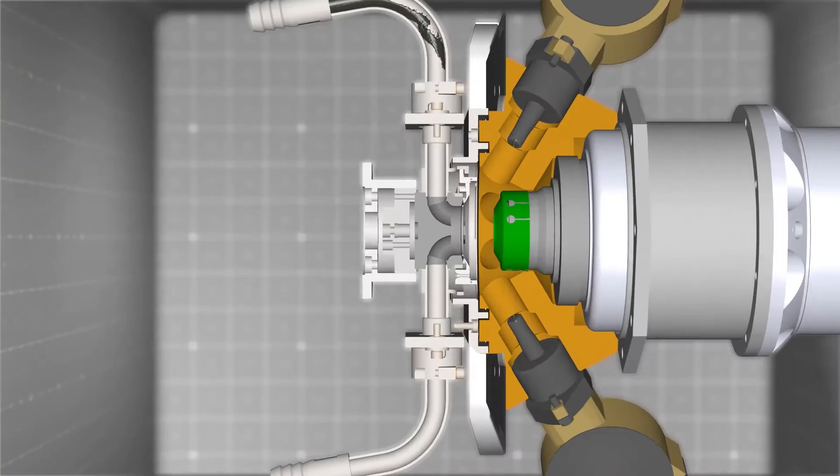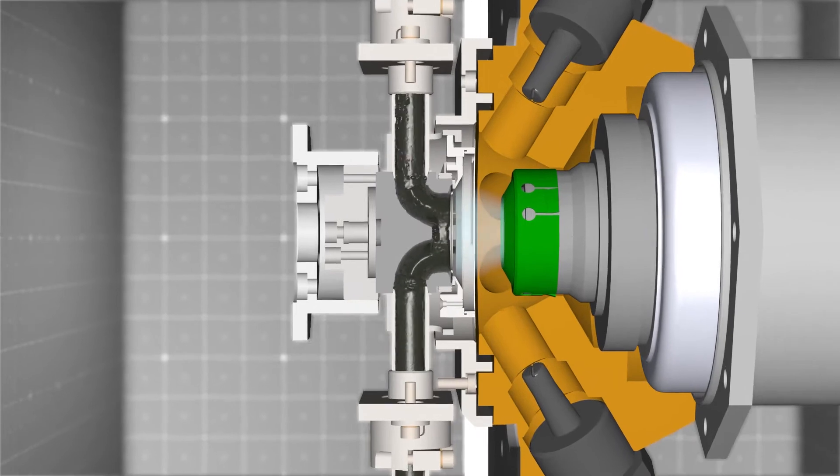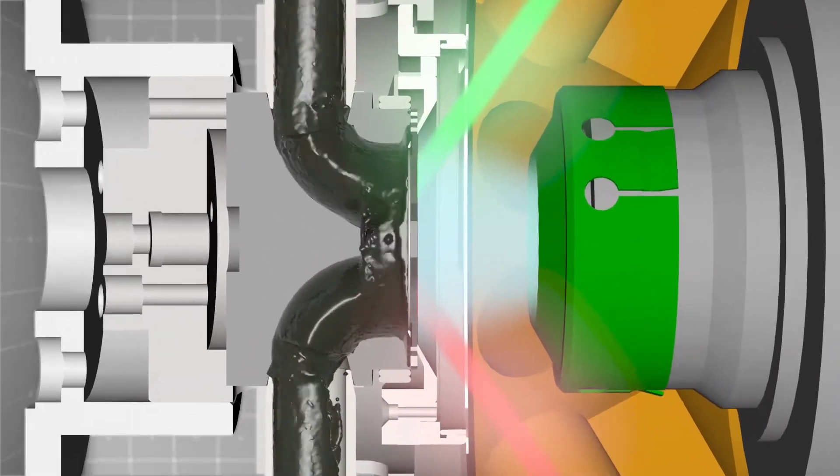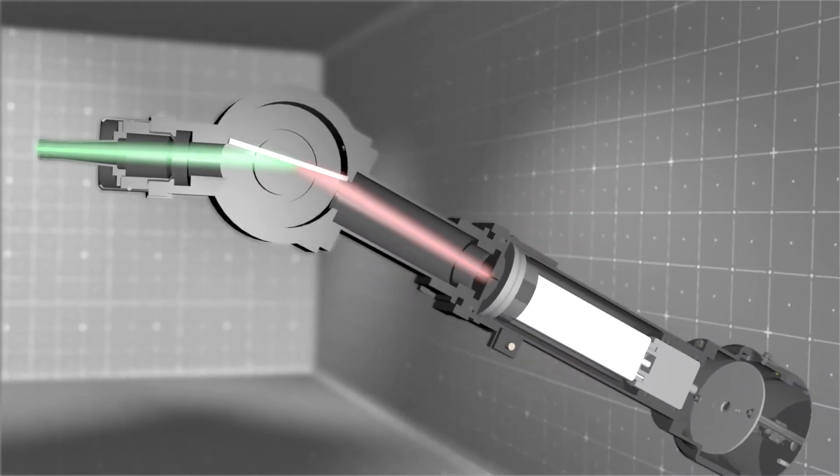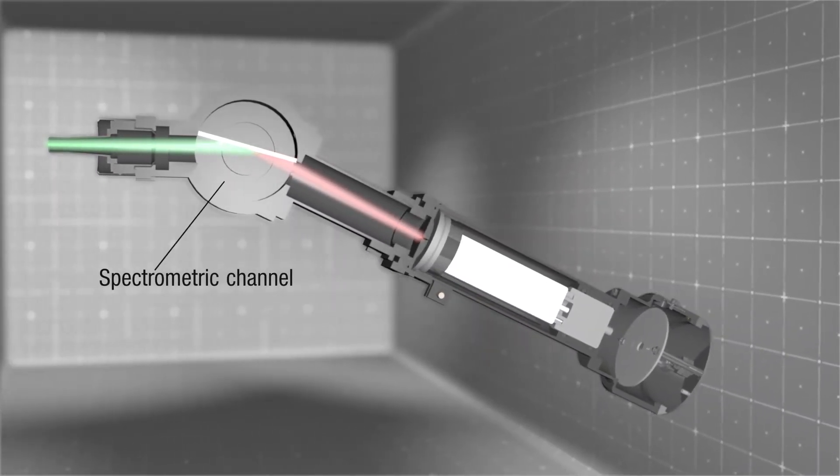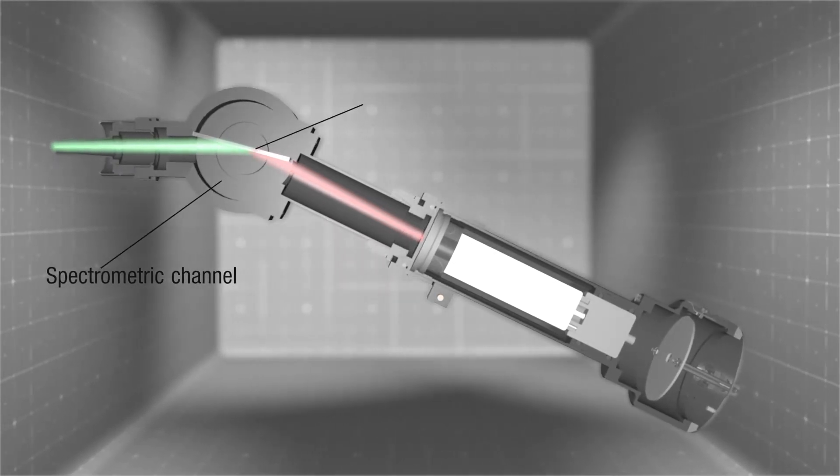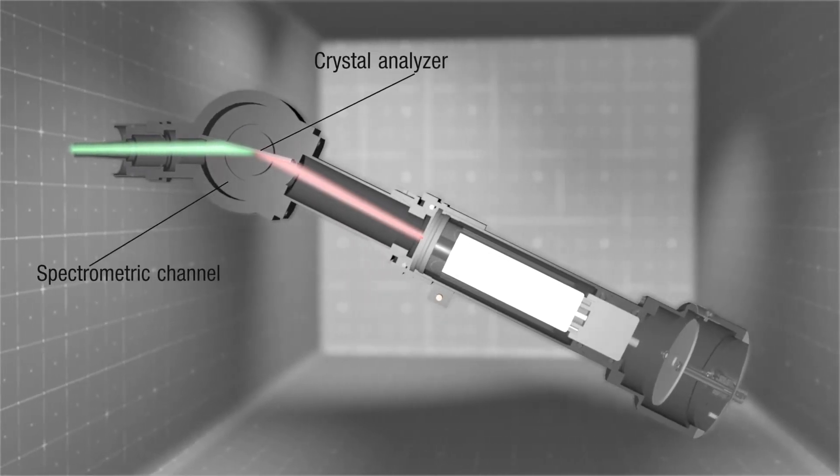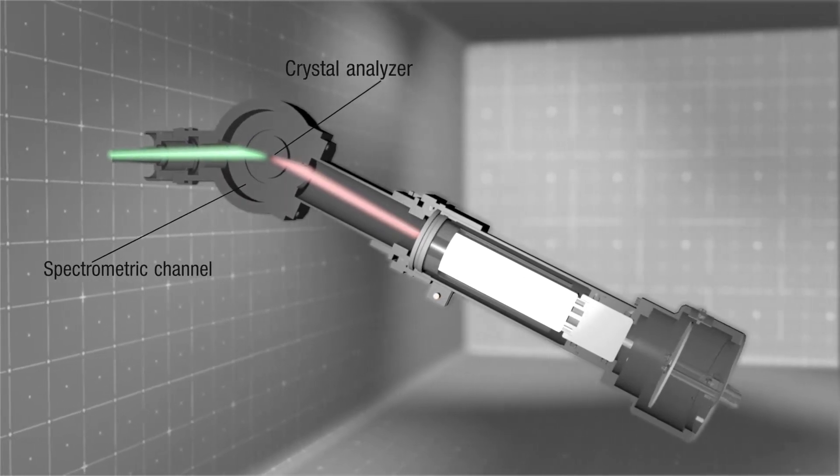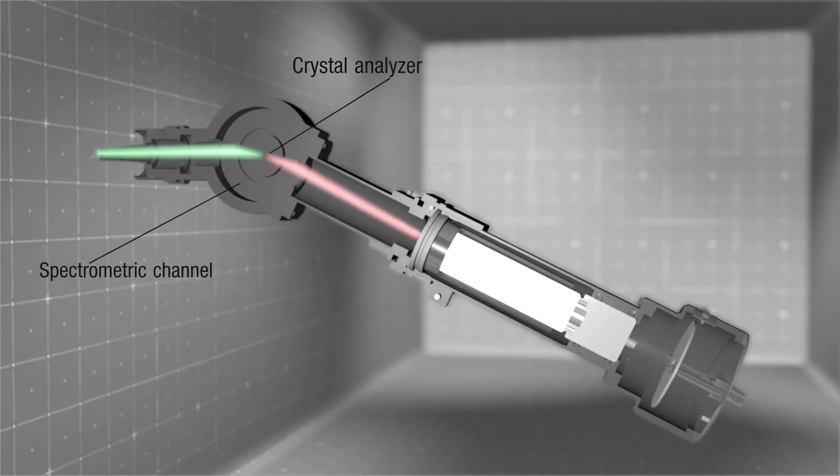The primary radiation of the x-ray tube excites fluorescent radiation of atoms in a liquid sample. The fluorescent primary radiation and radiation scattered on the sample enters our spectrometric channel, with the main structural element being the crystal analyzer that physically discriminates radiation of the required wavelength according to the laws of diffraction.